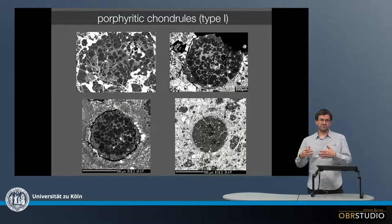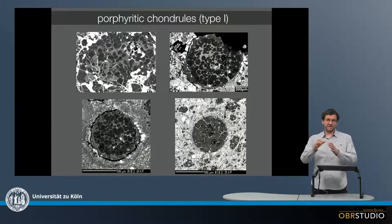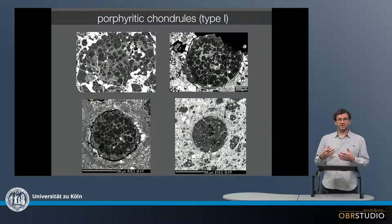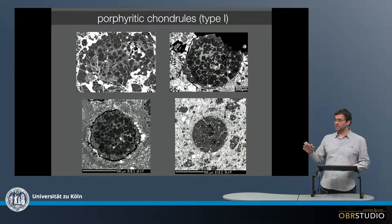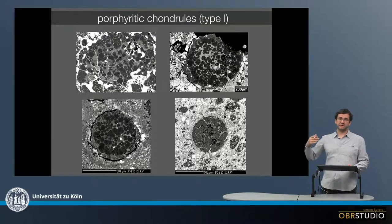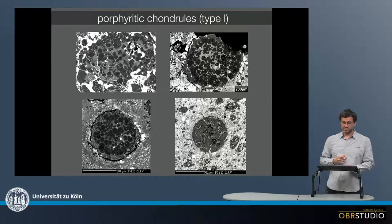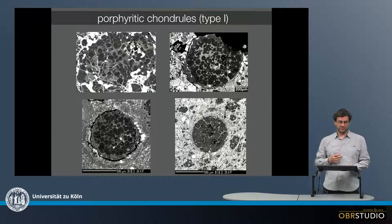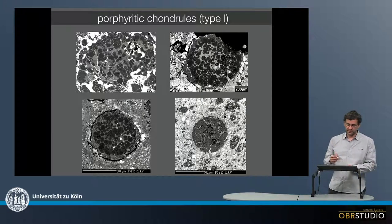All the chondrules are classified in various types. One subclassification is type 1 and type 2, whereas type 1 means magnesium-rich and type 2 means iron-rich. These are all porphyritic chondrules that are magnesium-rich, so these are all of type 1.